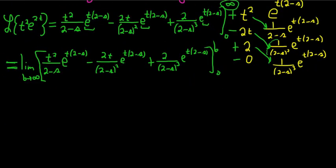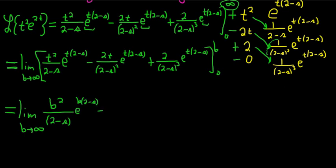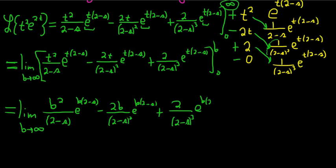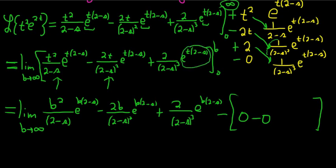So now we plug in b first, then subtract the result at zero. Plugging in b for all the t's: b squared over (2 minus s) times e to the b(2 minus s), minus 2b over (2 minus s) squared times e to the b(2 minus s), plus 2 over (2 minus s) cubed times e to the b(2 minus s). Then we subtract the bracket for t equals zero — those first two terms are zero, and e to the zero is one, so we're left with plus 2 over (2 minus s) cubed.